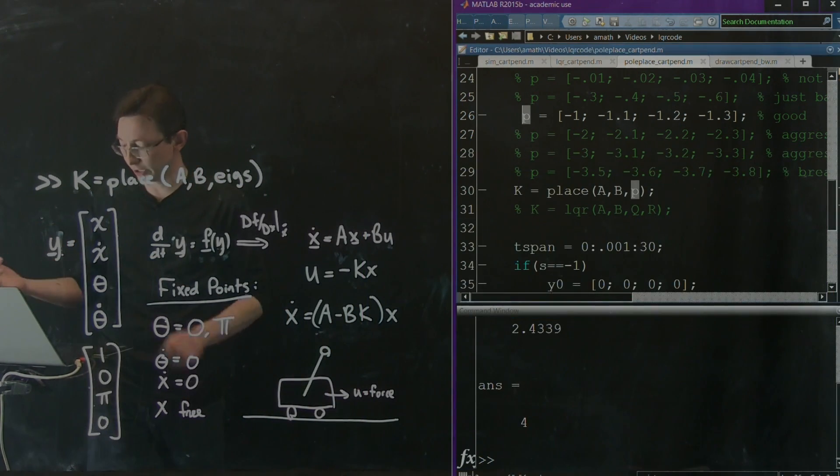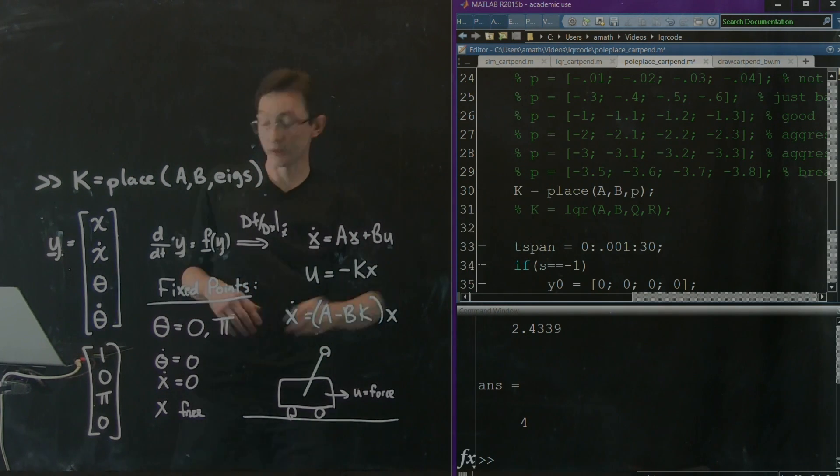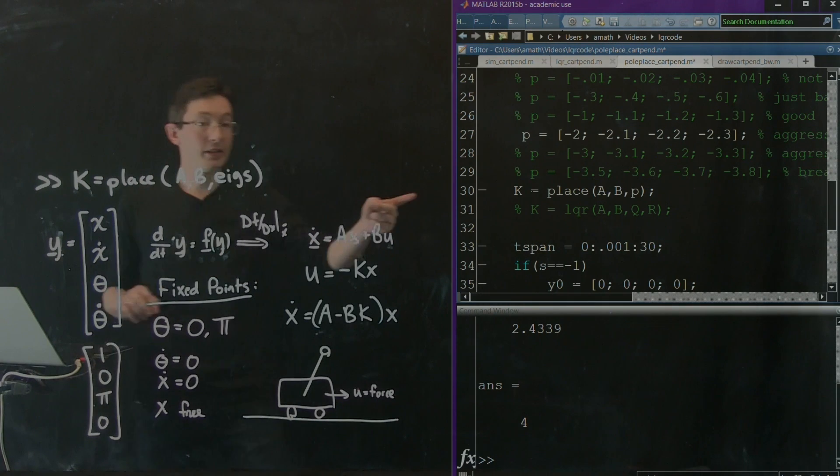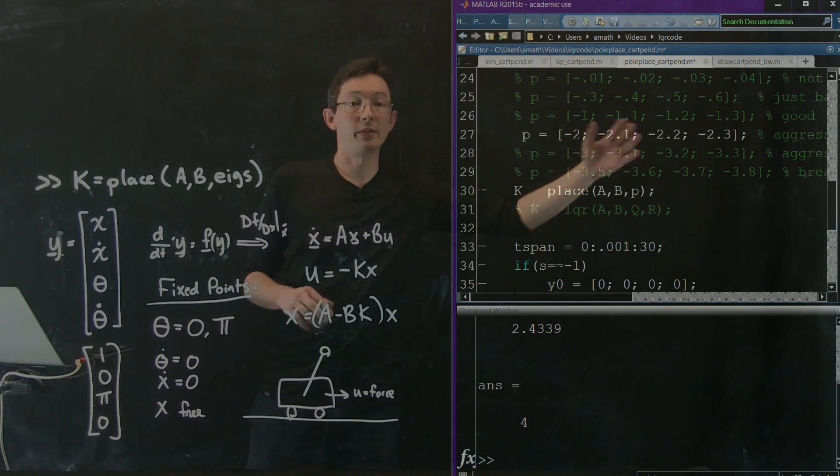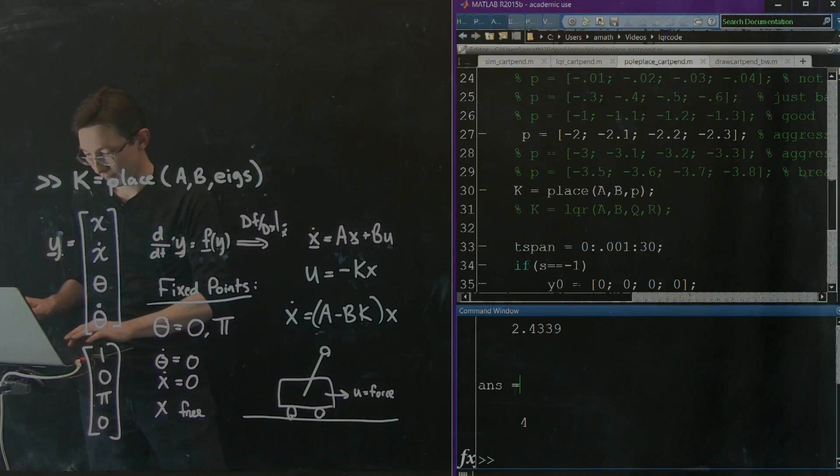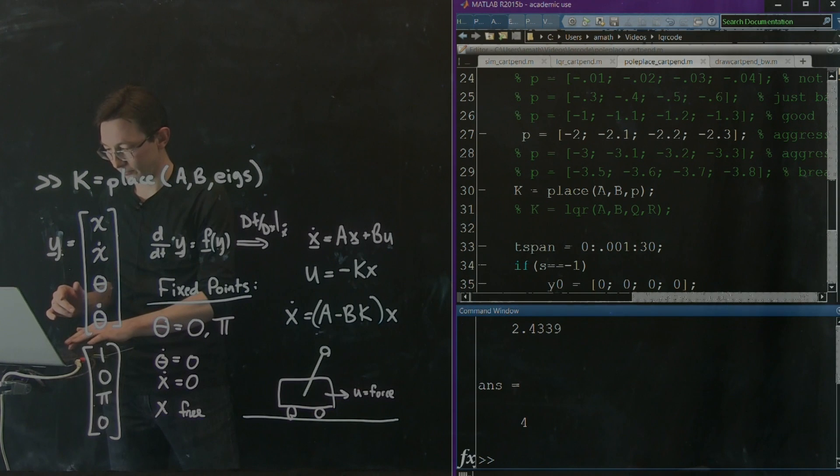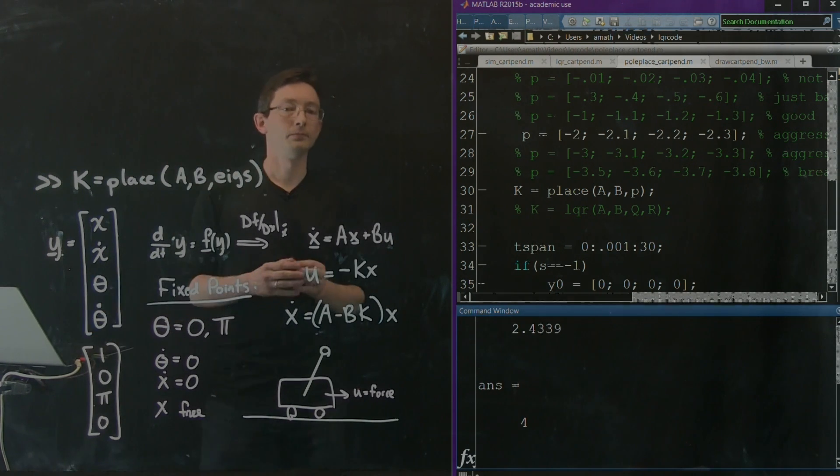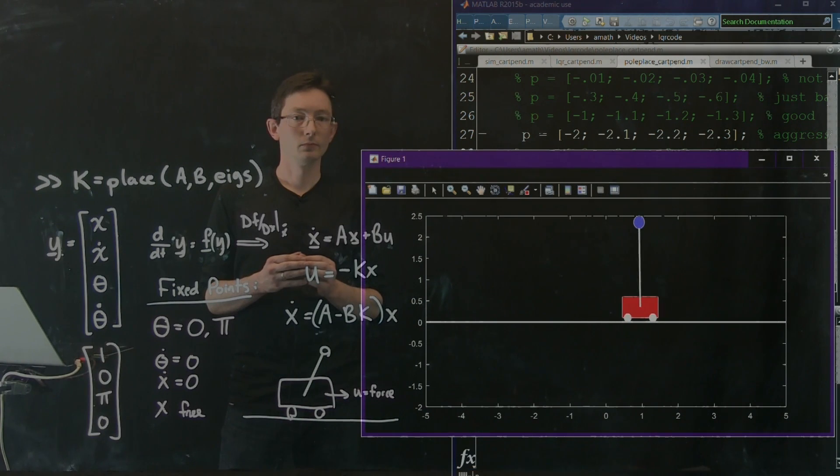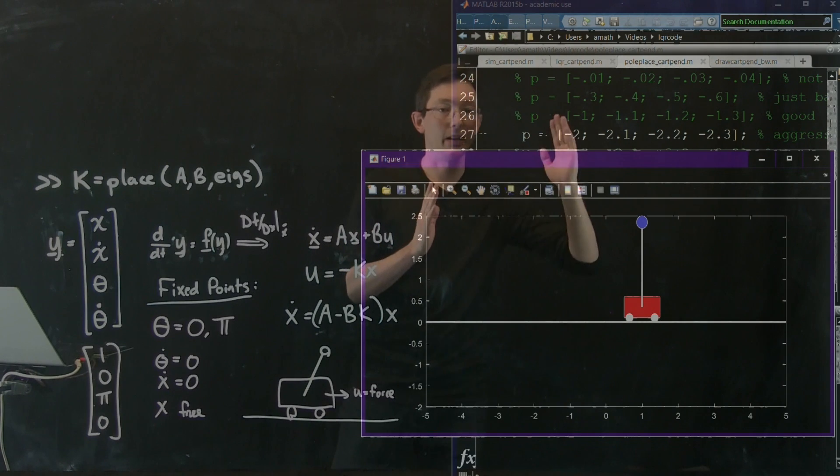Now, could we just keep doing this indefinitely? What if we make them more stable? Okay. So here I'm going to make, you know, minus 2, minus 2.1 and so on and so forth. So these are even more aggressive. Let's try this. Maybe this will just go right to the point and be good. Okay. It's really fast. Okay. Didn't take any time getting there. It was very aggressive, but you could also see it started getting pretty jerky, right?